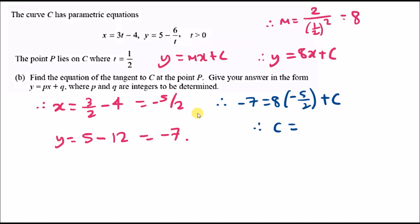You should get 13. That means the final solution, the equation of the tangent, is going to be y equals 8x plus 13, where p is 8 and q is 13.